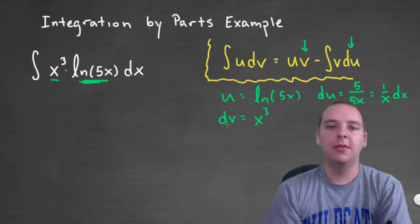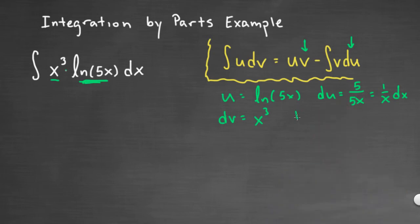Alright, if dv is x cubed, how could I retrieve just the v? I'd integrate and get x to the 4th over 4. Alright, so now I have all the pieces of my puzzle. I've got a u, I've got a v, and I've got a du. So let me plug these in here, and we'll see what we get.